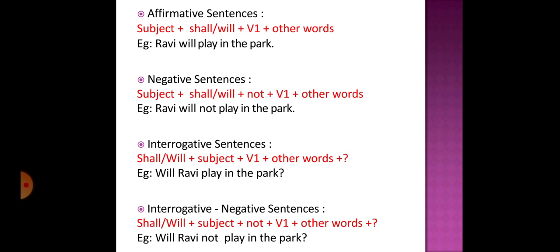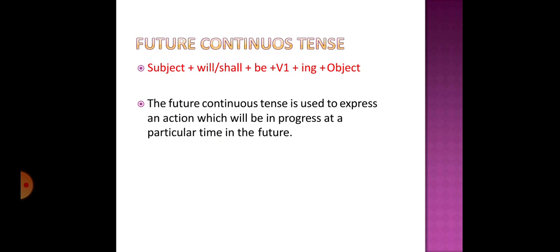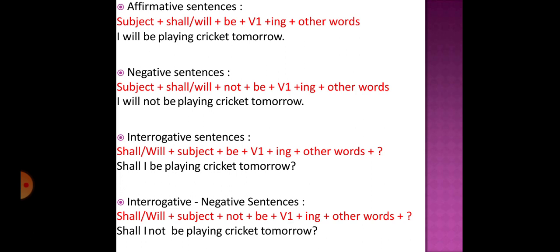Moving on to the future continuous tense. The future continuous tense is used to express an action which will be in progress at a particular time in the future — it will be going on at some time in the future. For example: 'The teacher shall be teaching this lesson' or 'He will be living with us next month.' These actions are going to take place somewhere in the future. Now let's see the sentence structures.